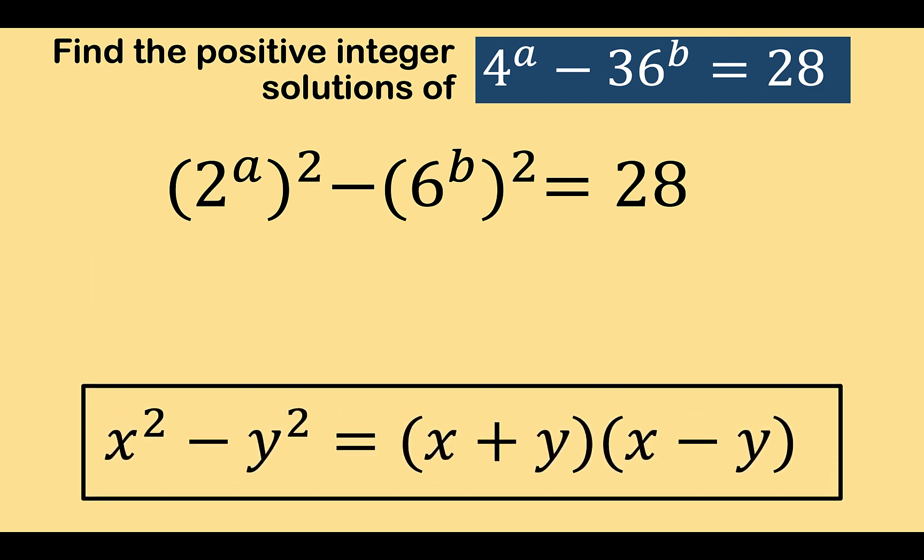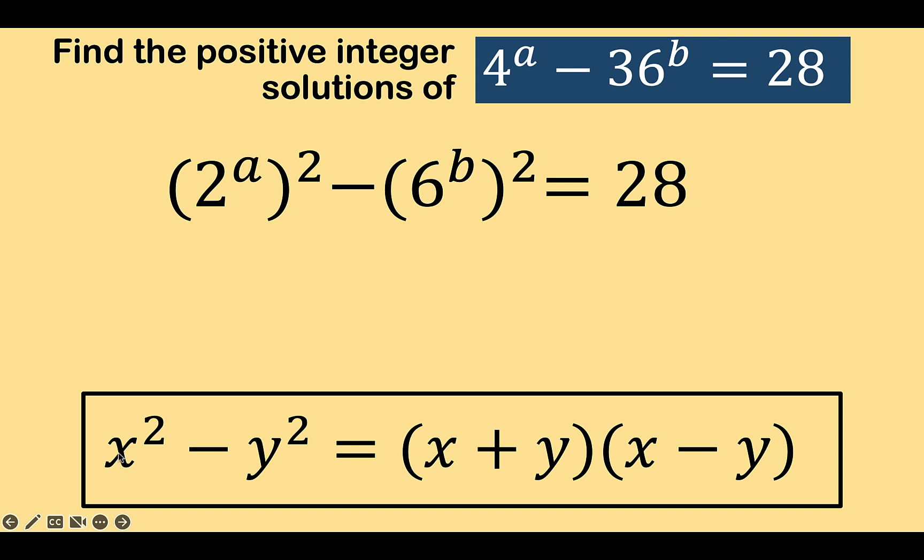In here, our x is 2 raised to a, our y is 6 raised to b, and so we now have this result. The difference of 2 squares, 2 raised to a and 6 raised to b, is now equal to the product of the sum and difference of these two numbers. Again, we copy equals 28 at the right side.